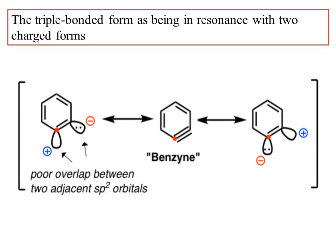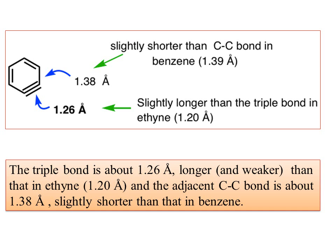There is resonance hybrid stability to some extent. The bond length in benzyne: unlike benzene where all single and double bonds have the same bond length, in benzyne the bond length is slightly shorter than the C-C bond in benzene. The bond length in benzyne is 1.38 Å, benzene is 1.39 Å, while a typical triple bond has a bond length of about 1.26 Å — meaning the triple bond in benzyne is longer and weaker than that of ethyne, and the adjacent carbon-carbon bond is about 1.38 Å, slightly shorter than that in benzene.